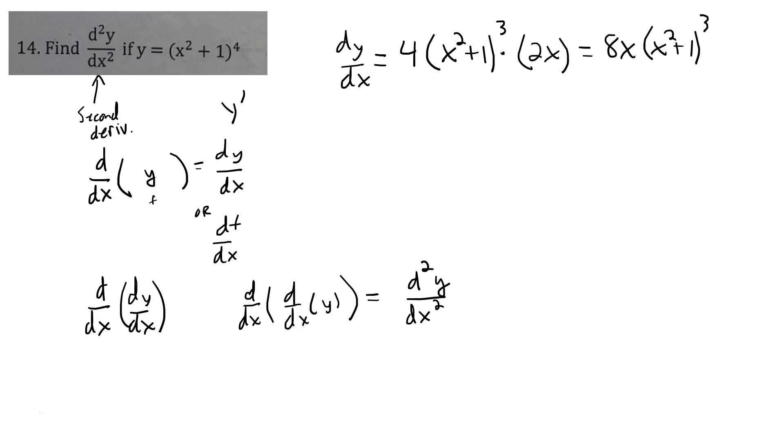In general, if you're taking a function raised to a power, and you want to take its derivative, you bring the power down, you take that same function to the one less exponent, and then you multiply by the derivative of that function. That's how it works in general.